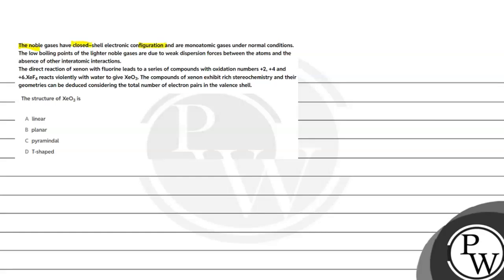Noble gases have closed electronic configuration and are monoatomic gases under normal conditions. The low boiling point of the lighter noble gases is due to the weak dispersion forces between atoms and the absence of other interatomic interactions.